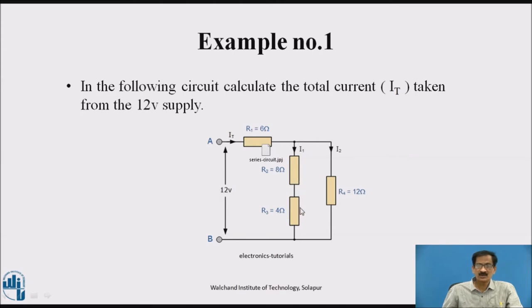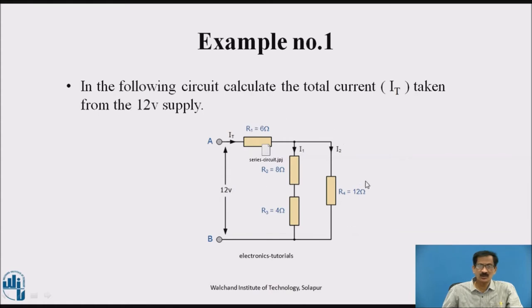Since these two resistances are in series, we can add them: 8 plus 4 equals 12 ohm. This 12 ohm resistance is now in parallel with another 12 ohm resistance. To find the total current, we must find the equivalent resistance of the network, which consists of 12 ohm parallel to the two series resistances, then in series with the 6 ohm resistance.